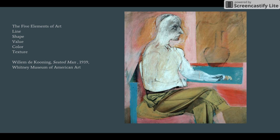I've chosen a painting by an artist named William de Kooning, who was an artist living in New York in the 20th century. He died in the late 80s, I think. This is a painting from 1939. It's a modern work of art. It's abstract — not completely abstract. Obviously, you can see a figure sitting at a table.